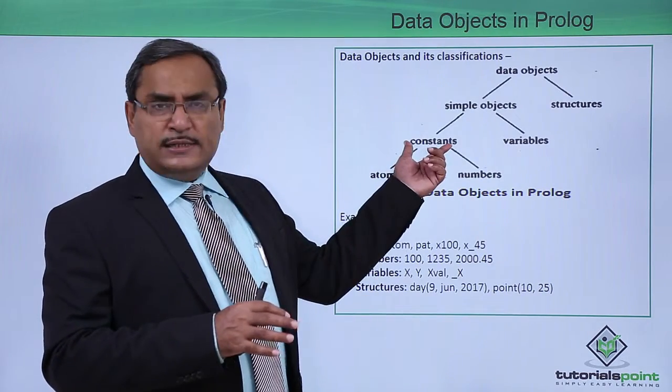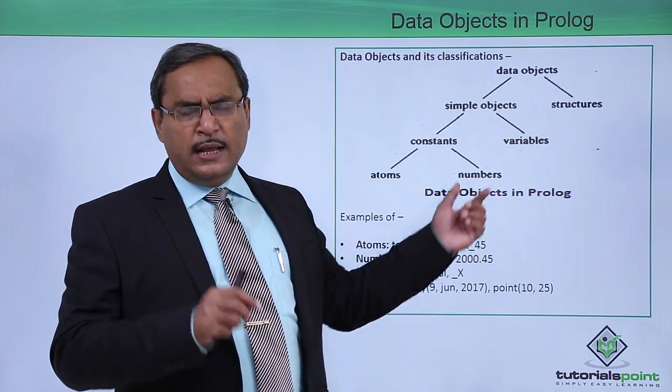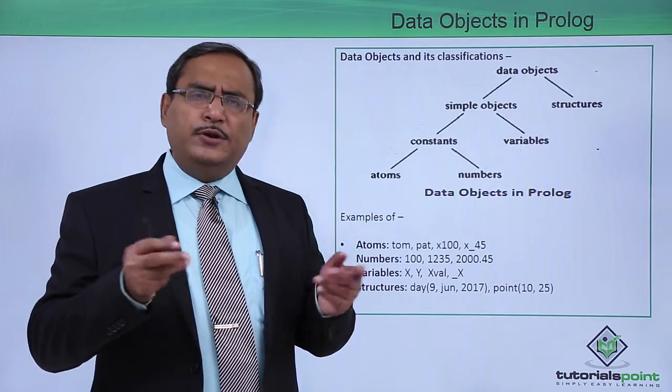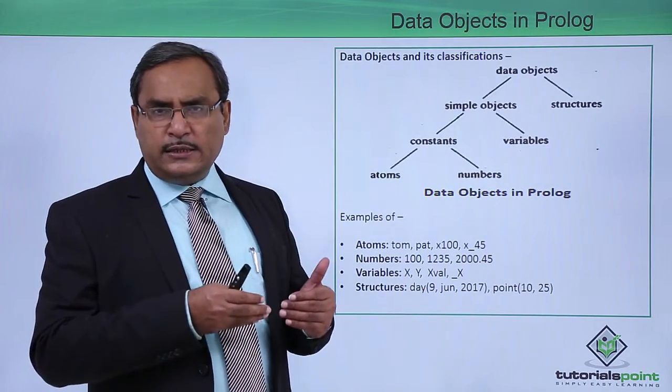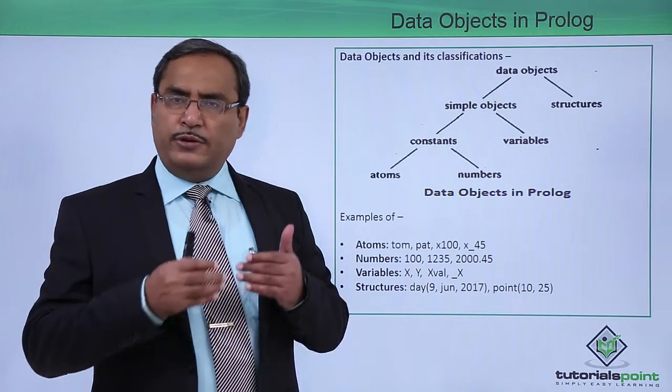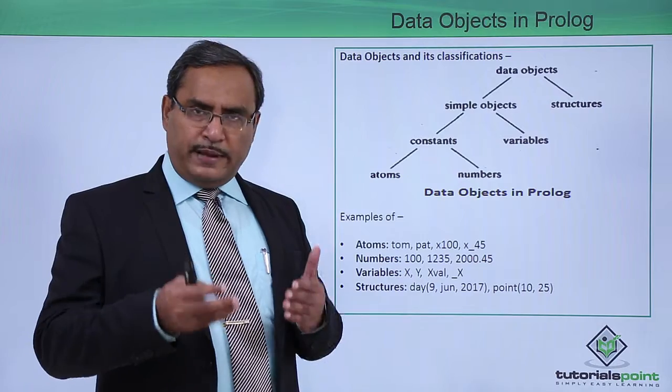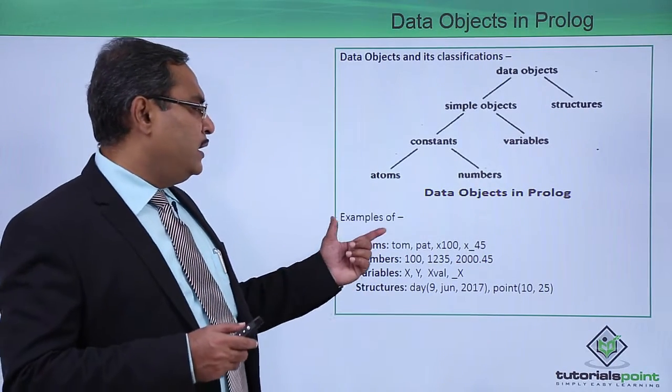Constants can be divided into two categories: atoms and numbers. 'tom' written in lowercase letters can be treated as an atom. Numbers can be either integer or real, but real numbers are not so much used in Prolog codes. We mostly use integer number representations.